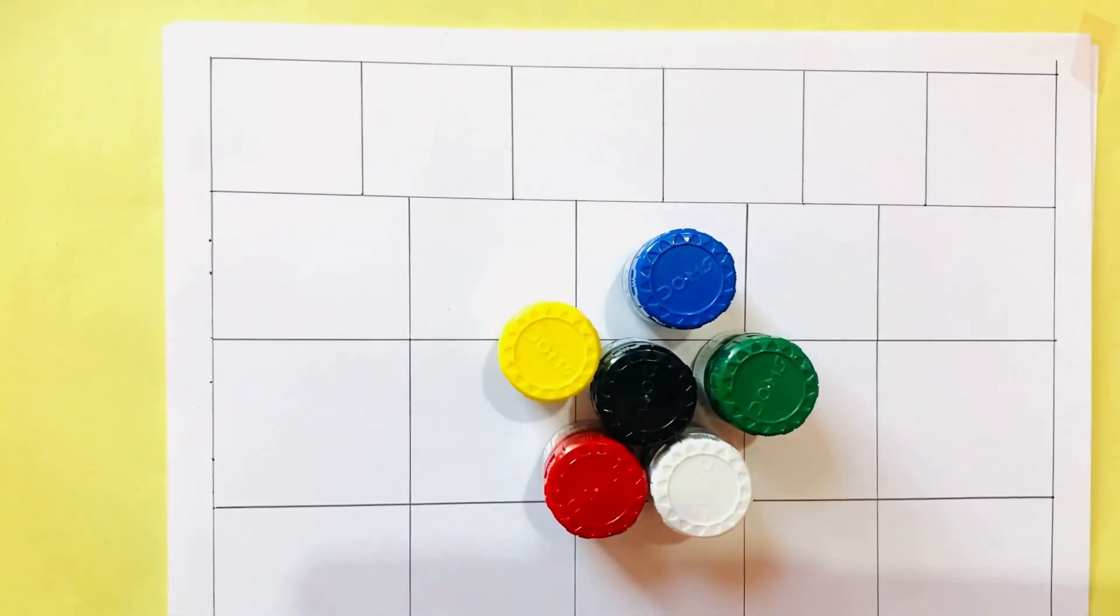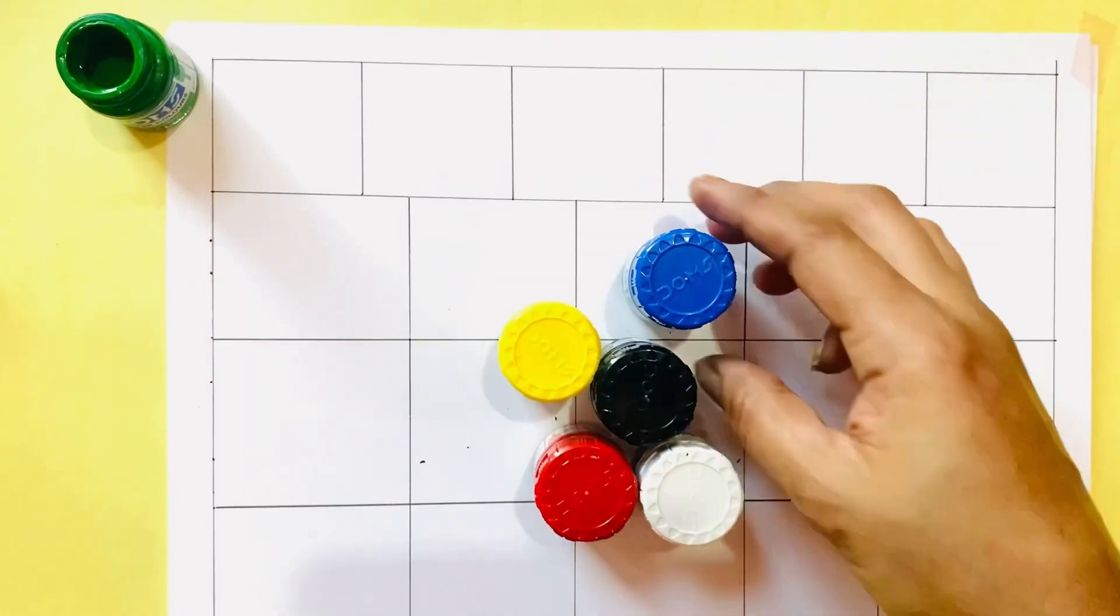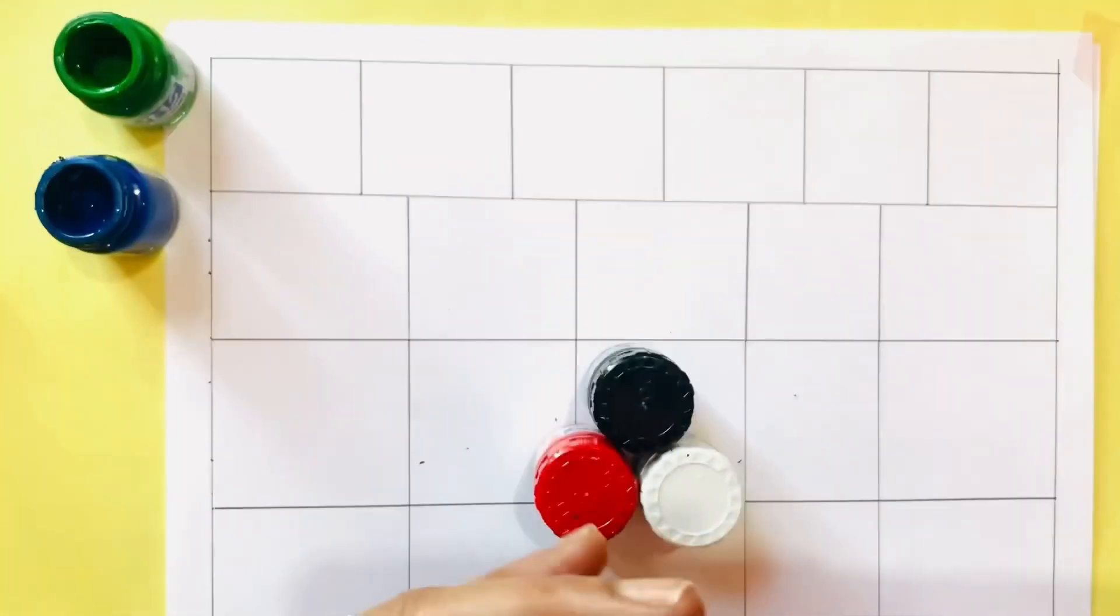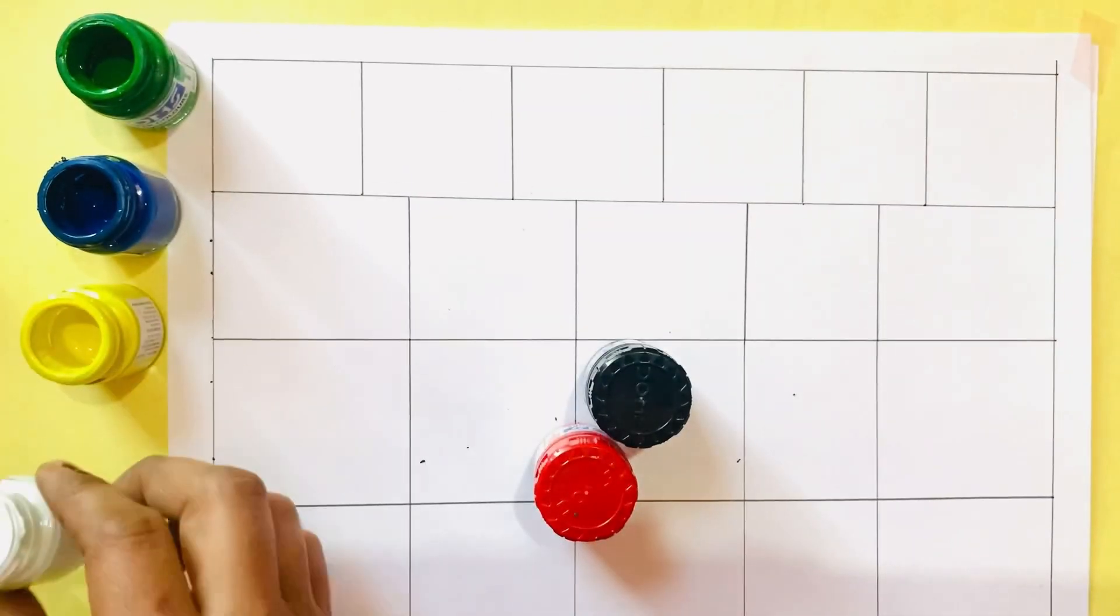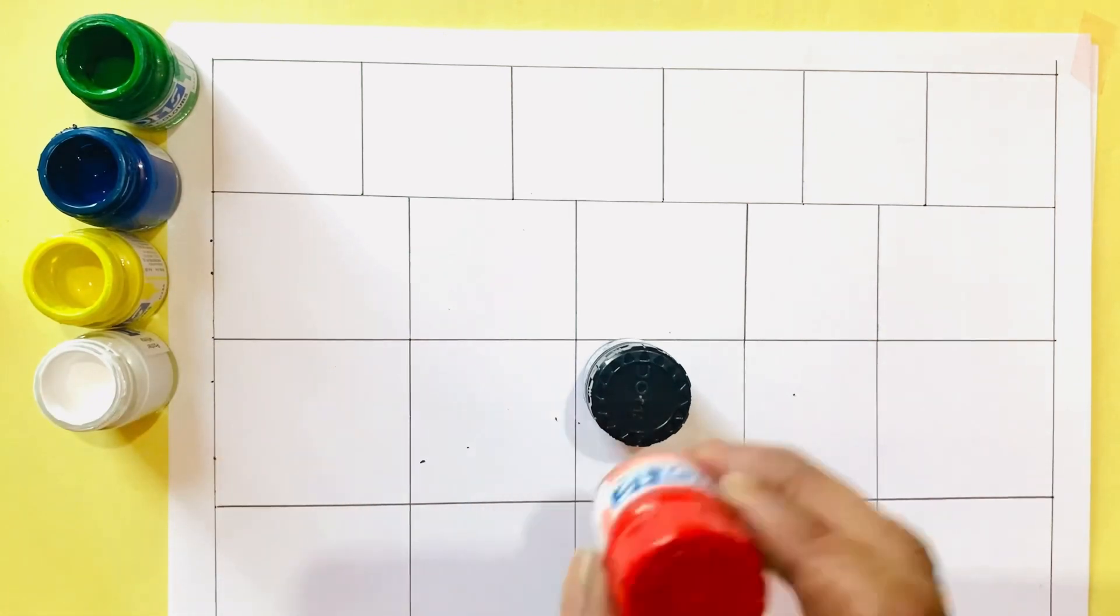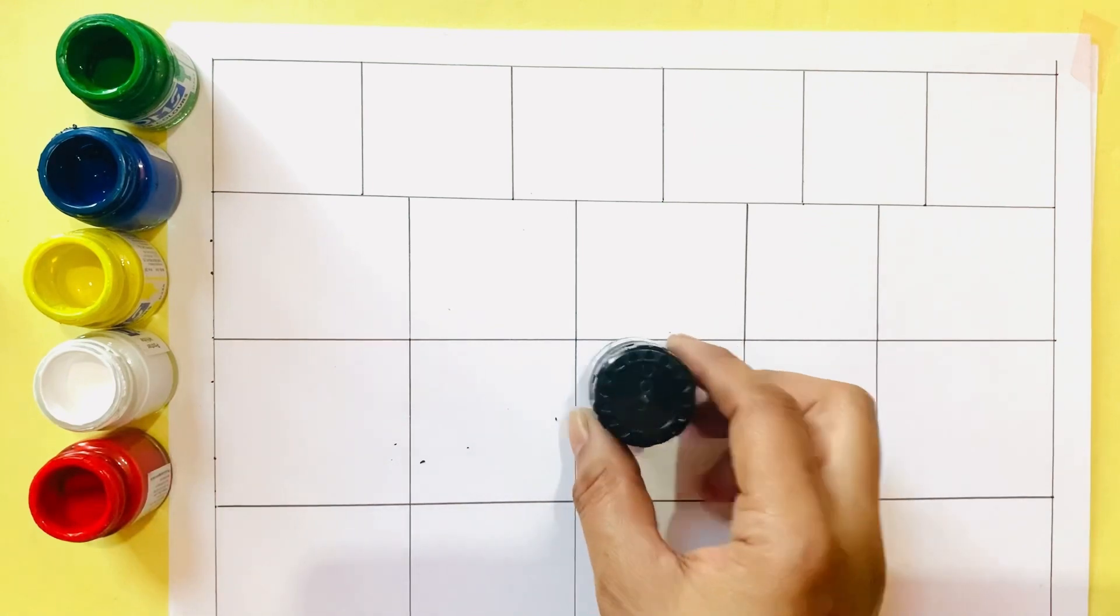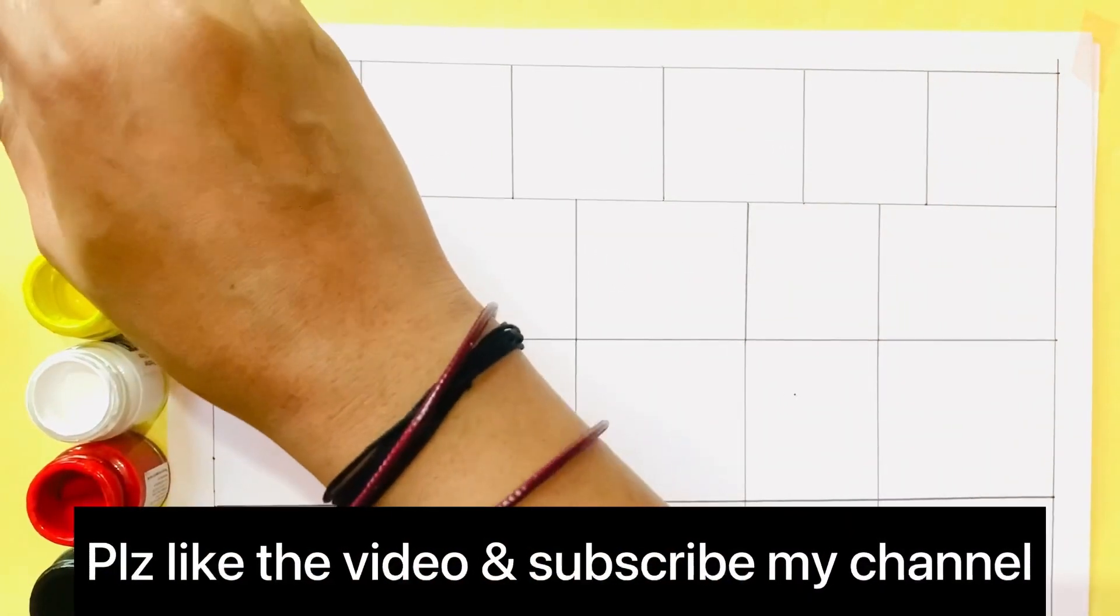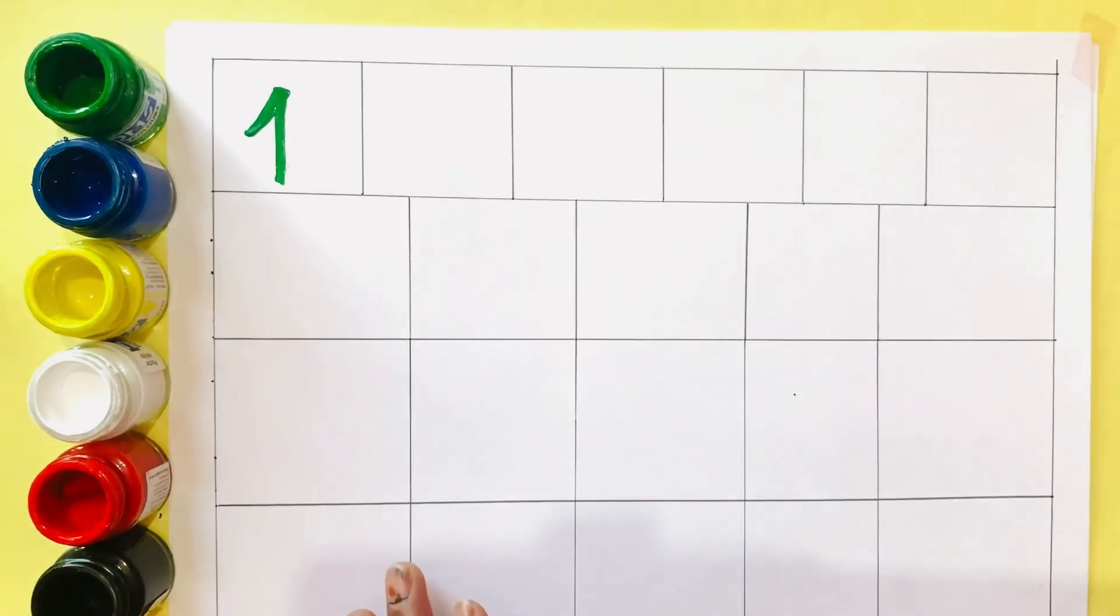Hey kids, welcome back to my channel. Today we learn counting. Green color, blue color, yellow color, white color, red color, black color. One more thing kids, don't forget to like the video and subscribe to my channel.